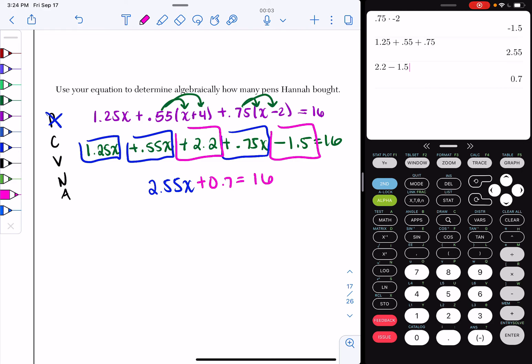Now it becomes a two-step equation because I combine my like terms. The V stands for variables on one side. My variables are on one side, so I'm good. N stands for numbers on the other. So I have to get rid of that 0.7. So I'm going to subtract 0.7 from both sides of my equation. And I get 2.55X equals, I'm going to hit enter, and I get 15.3.